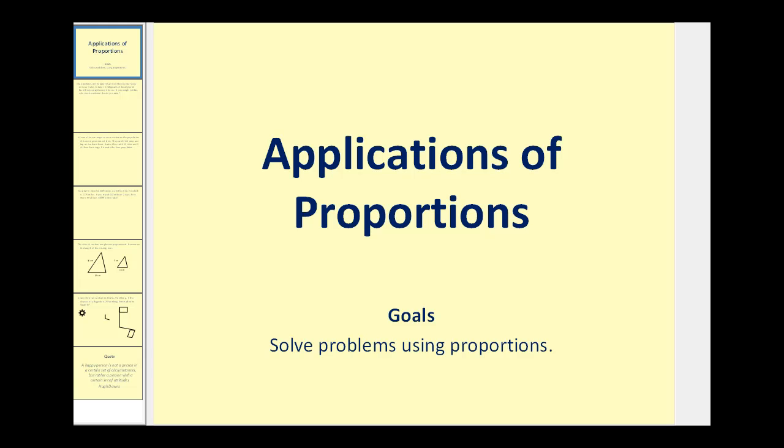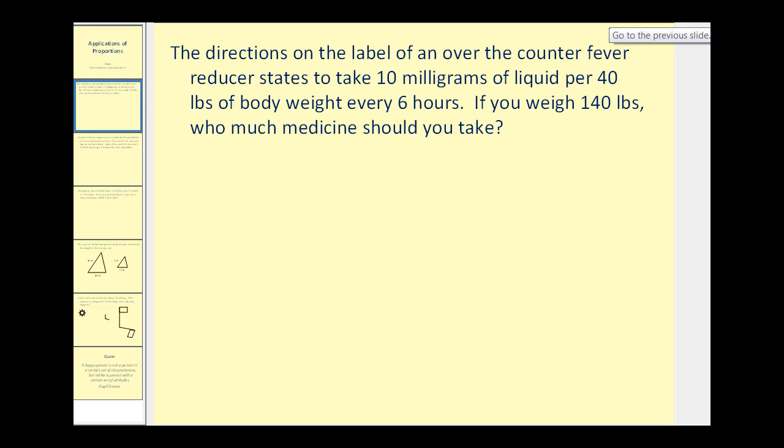Welcome to a video that will go over several application problems that can be solved using proportions. Let's take a look at the first example. The directions on the label of an over-the-counter fever reducer states to take 10 milligrams of liquid per 40 pounds of body weight every six hours. If you weigh 140 pounds, how much medicine should you take?